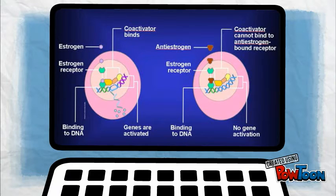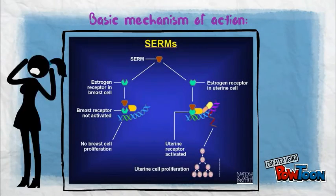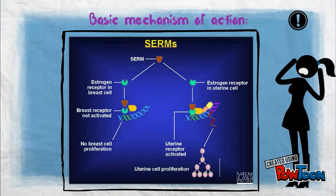Depicted in this figure is the normal mechanism of estrogen on estrogen receptors on the left-hand side, and on the right side we compare the action of selective estrogen receptor modulators on these estrogen receptors and the different results that they cause thereof.